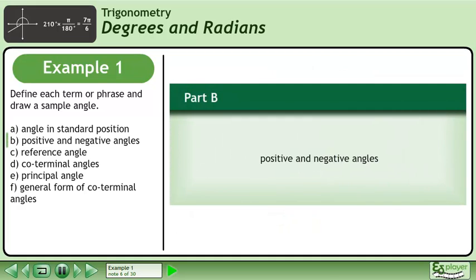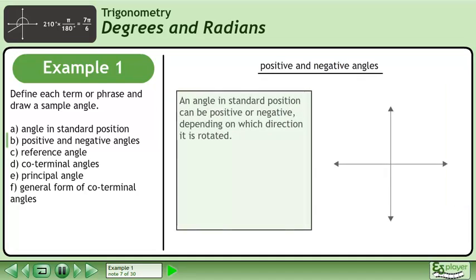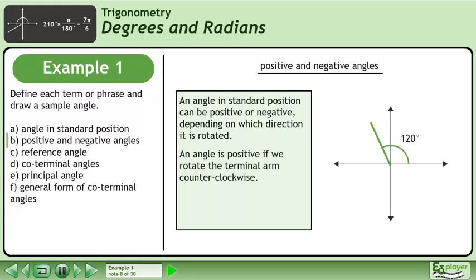In Part B, we'll define positive and negative angles. An angle in standard position can be positive or negative depending on which direction it is rotated. An angle is positive if we rotate the terminal arm counter-clockwise.